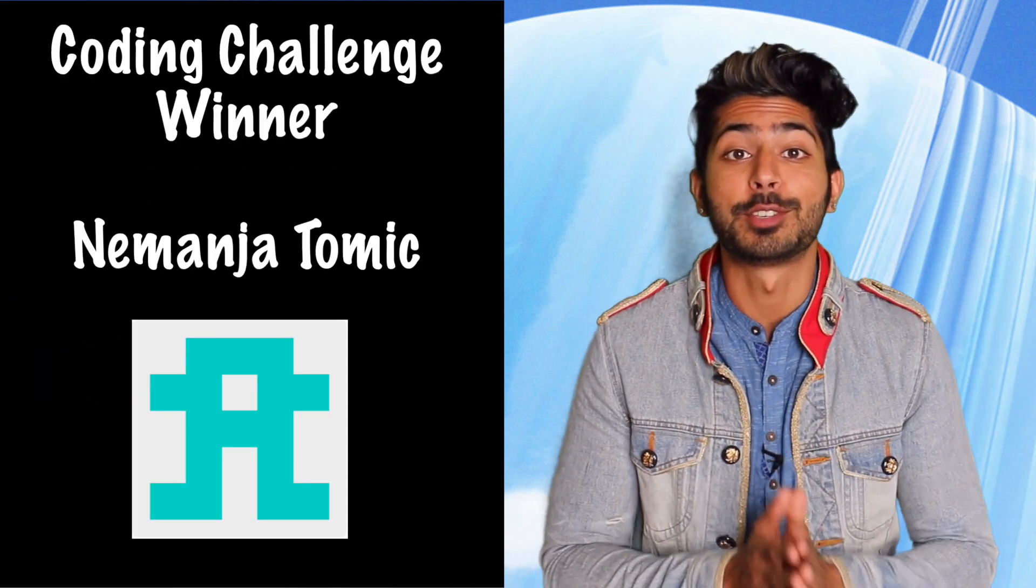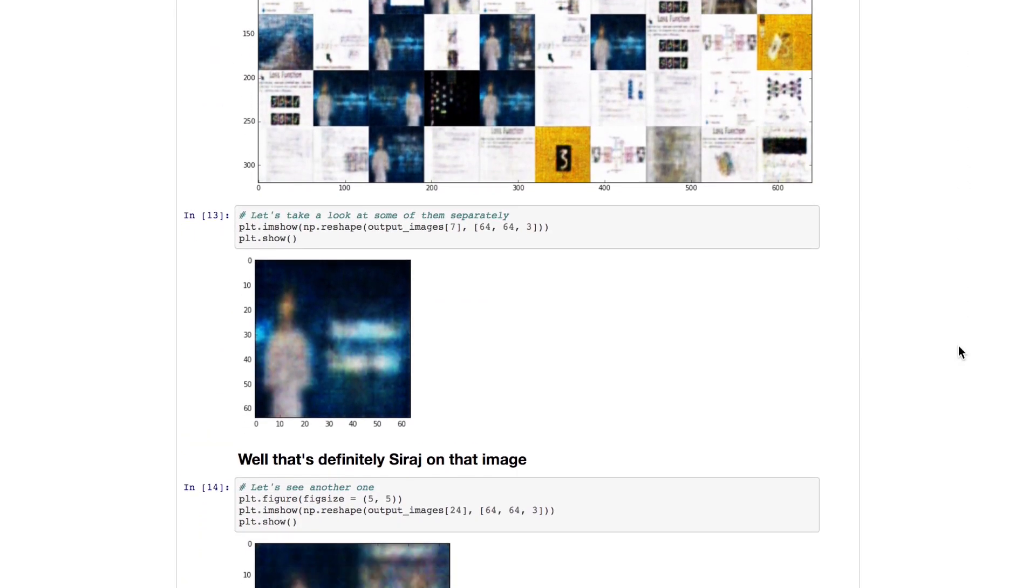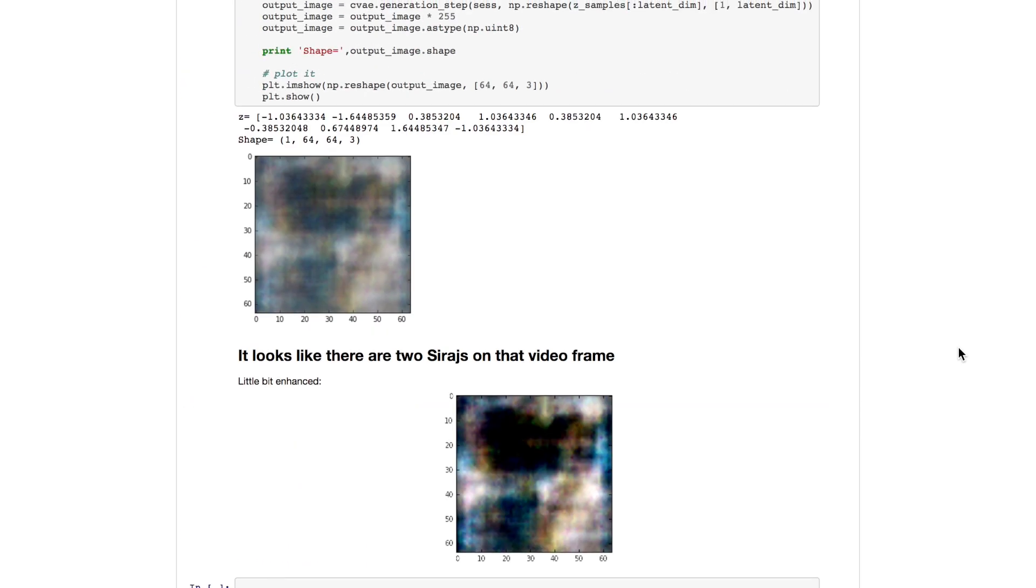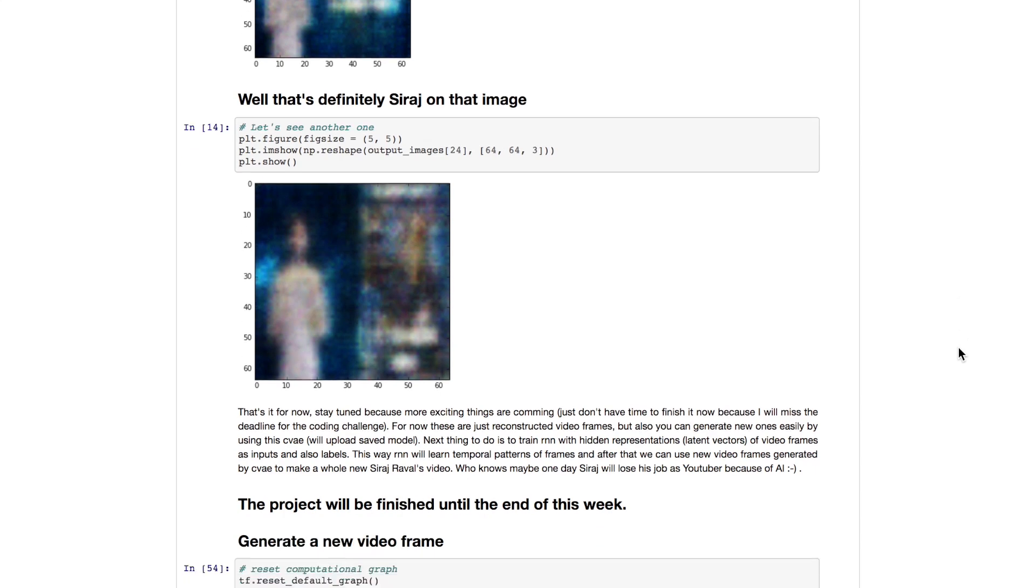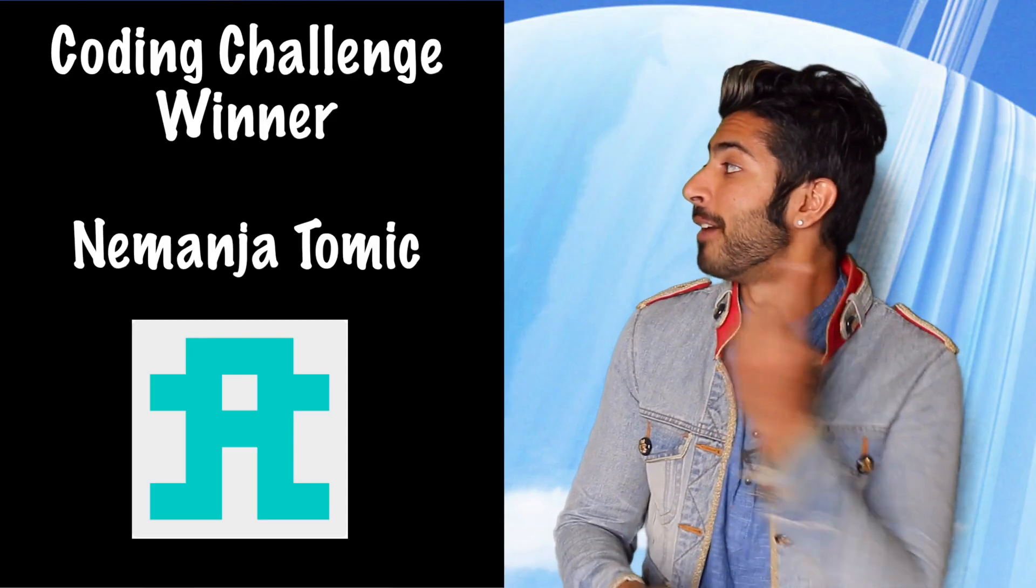First place for last week's coding challenge goes to Nemanja Tomik. Nemanja used a convolutional variational autoencoder to generate videos by training on my own videos. He also added a recurrent network to this architecture, which I haven't seen done before. Very cool results in the Jupyter Notebook, definitely check it out. Wizard of the week.